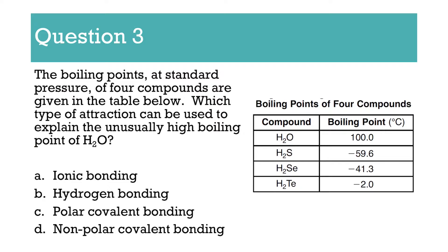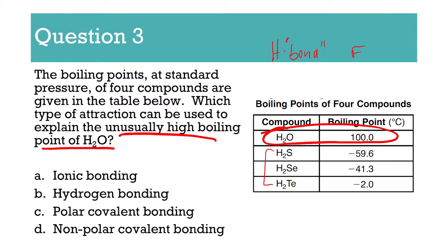Number three says the boiling points at standard pressure of four compounds are given in the table. Which type of attraction can be used to explain the unusually high boiling point of water? Even without the table, it's telling you that H2O has an unusually high boiling point — 100 degrees Celsius — while the other three have much considerably lower boiling points. H2O has that oxygen, and the others don't have F, O, or N. Therefore, again, it is hydrogen bonding — a strong intermolecular force that causes things to have unusually high boiling and melting points.